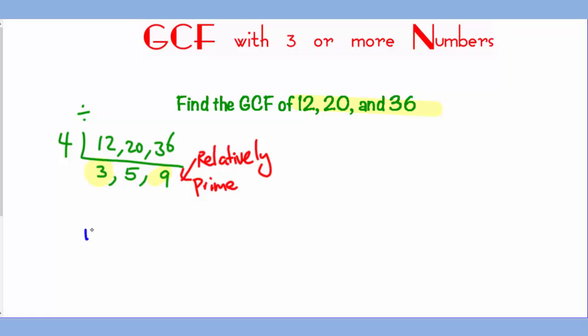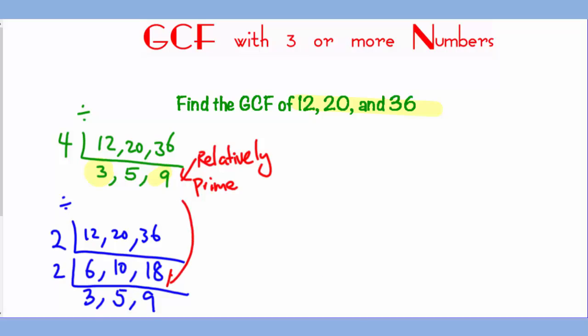Once again, you can redo this problem with a different common factor that you start off with. So notice how you can begin with 2, which brings 12 down to 6, 20 down to 10, and 36 down to 18. Since they still share a common factor, you continue dividing it by 2 brings it down to 3, 5, and 9. And again, you stop there because the numbers set together is relatively prime. The GCF is 4 in either case.